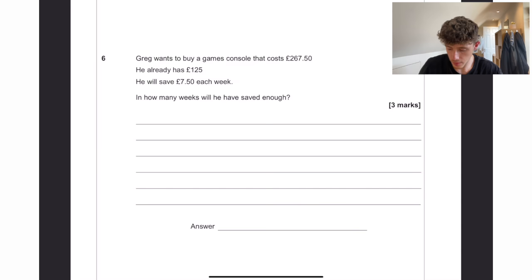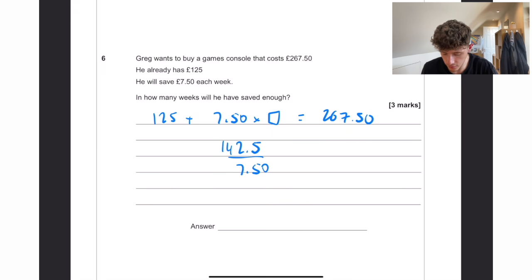Greg wants to buy a games console that costs £267.50. He already has £125. He will save £7.50 each week. In how many weeks will he have saved enough? So 125 plus £7.50 times by something to equal £267.50. So if we take away the £125, 267.5 take away £125 is going to be £142.50. And then if we divide that by £7.50, we get 19. So 19 weeks.